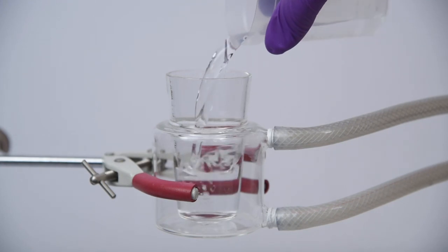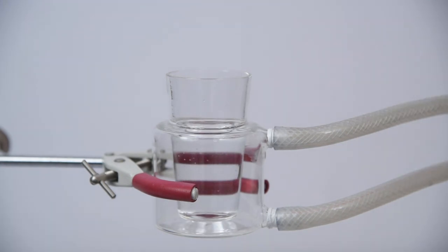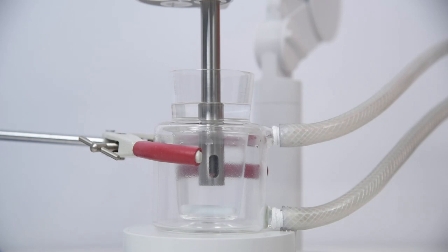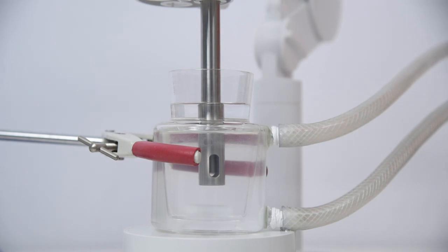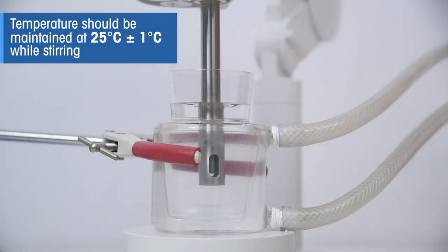For stage two, transfer a sufficient amount of the water sample in a suitable container, such as a thermostatic beaker, that helps in maintaining constant temperature of water sample. Maintain the temperature at 25 degrees Celsius, plus or minus 1 degrees Celsius, while stirring to obtain carbon dioxide equilibrium. We recommend to use a thermostat to do so.